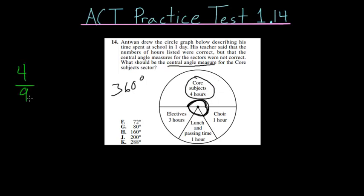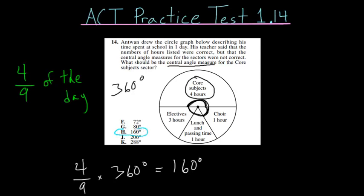So the core subjects take up four ninths of the day, and they would also take up four ninths of this central angle measure. So we just have to figure out what four ninths of 360 degrees is. To do that, we just have to multiply them. So four ninths times 360 degrees, and you can put this into your calculator to find that the central angle measure is going to be 160 degrees, and this answer is letter H.